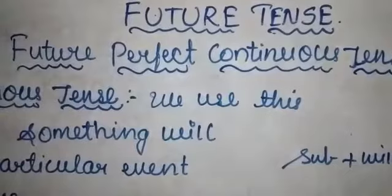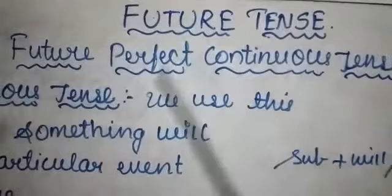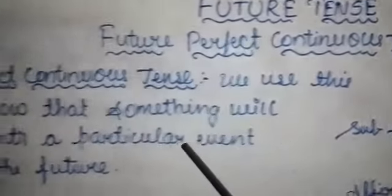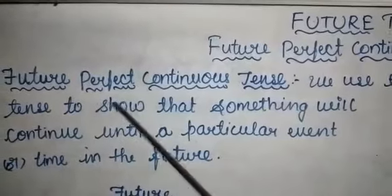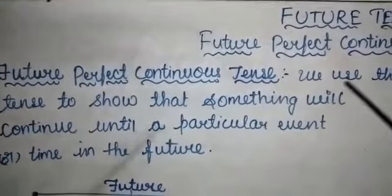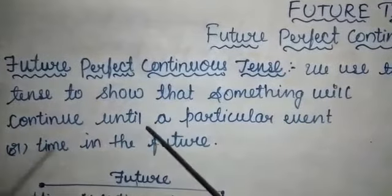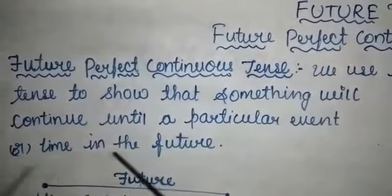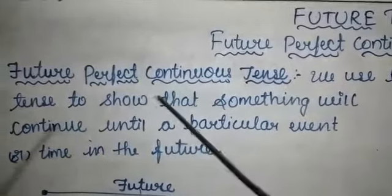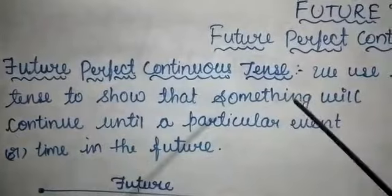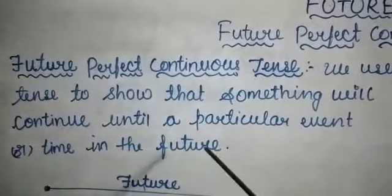In this lesson, we'll learn about future perfect continuous tense, its structure and uses. We use this tense to show that something will continue until a particular event or time in the future. That is called future perfect continuous tense.